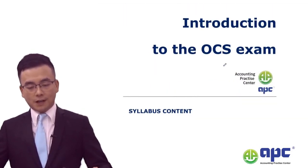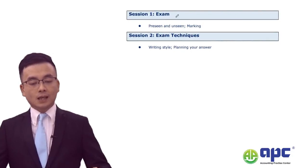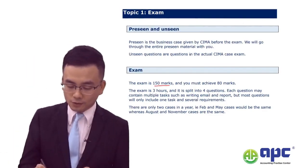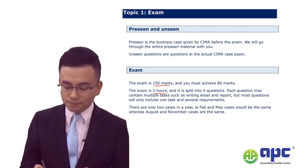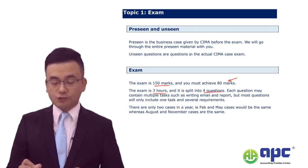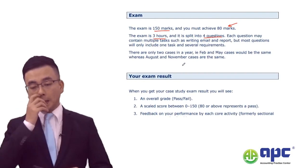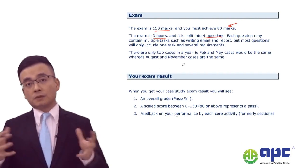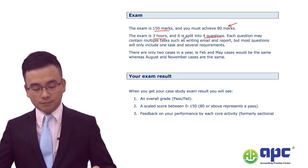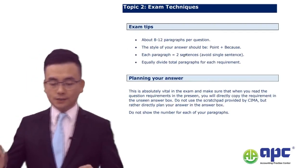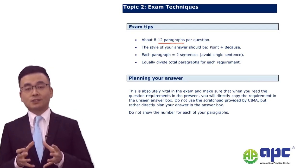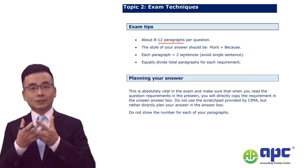In this section, I would like to introduce you to the OCS exam, including the exam itself and exam technique. This exam is 150 marks and three hours. You will need to achieve at least 80 out of 150 to pass. There are four questions in the actual exam, so usually that is 45 minutes per question. My suggestion is to write about 12 paragraphs per question, and each paragraph should avoid single sentences — mix two sentences together to form one paragraph.